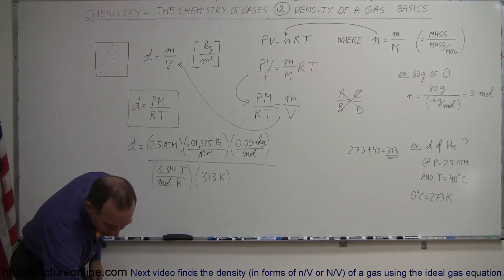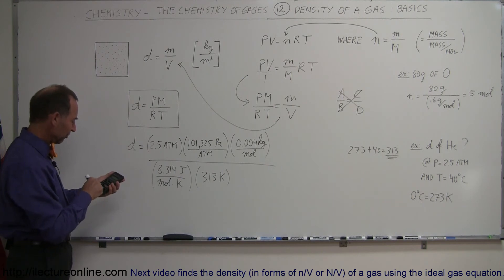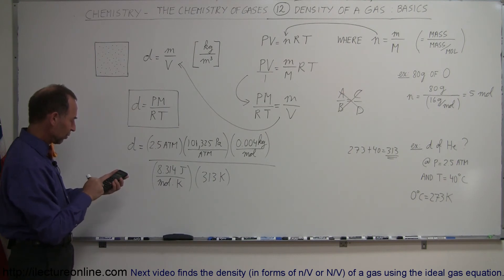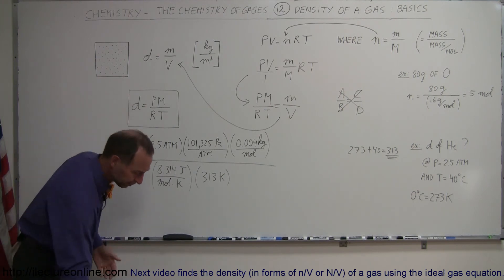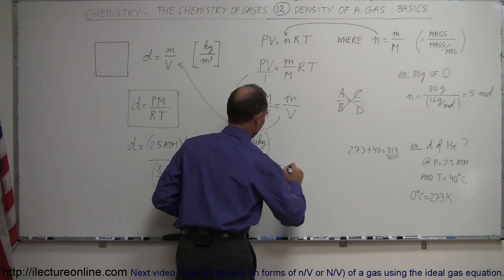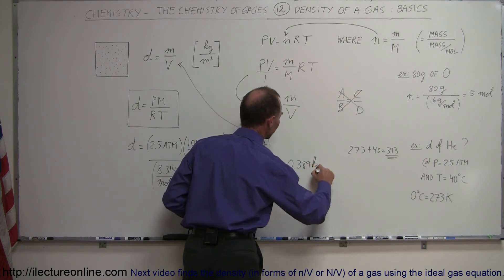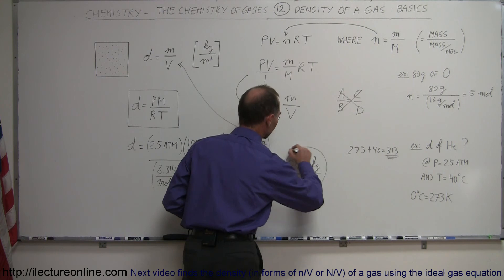Now we have everything in place and we're ready to use our calculator. We calculate: 2.5 × 101,325 × 0.004 ÷ 8.314 ÷ 313. The result: the density is 0.389 kilograms per cubic meter.